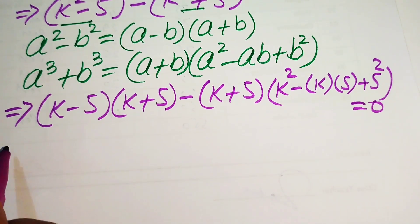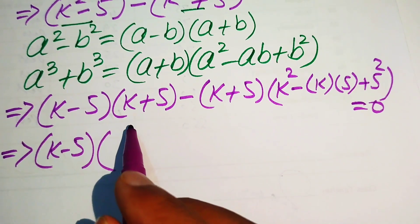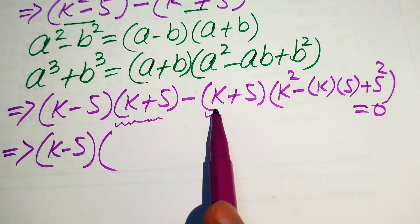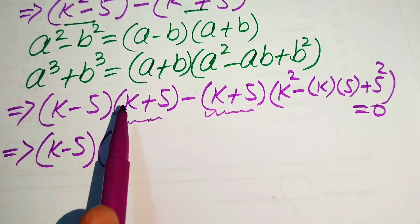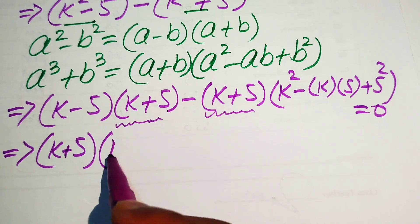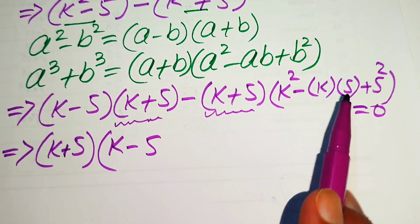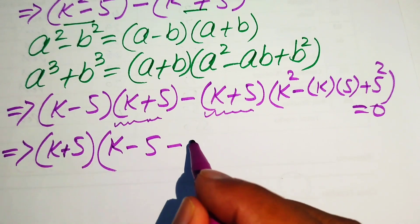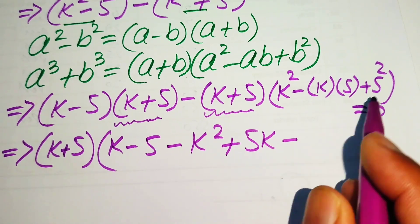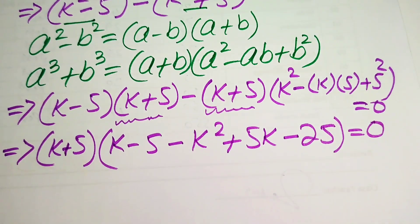We need some simplifications. From both terms we have (k plus 5) as a common factor. We multiply the negative sign through all remaining terms, giving minus k squared plus 5k minus 25. This whole equation equals 0.